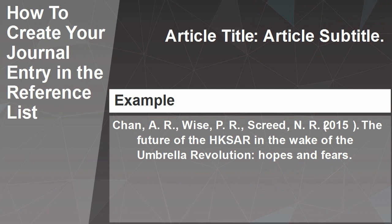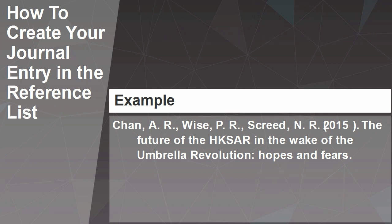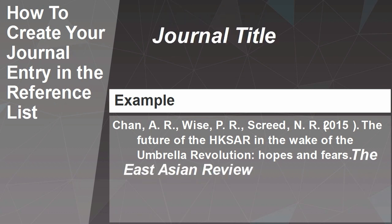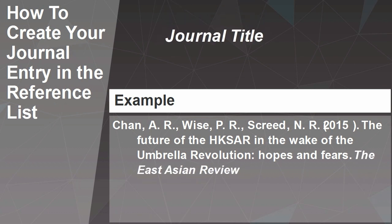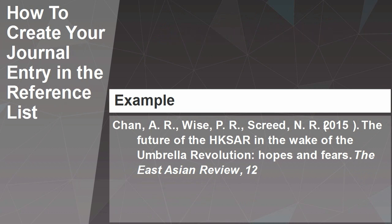It is important to note that only the first letter of the title is capitalised, along with any proper nouns or acronyms. Then insert the name of the journal title in italics, with each word capitalised and the volume number also in italics. Note that for grammar words like articles, prepositions, and auxiliary verbs, you should not capitalise. Then add the issue number in brackets — this is not in italics.